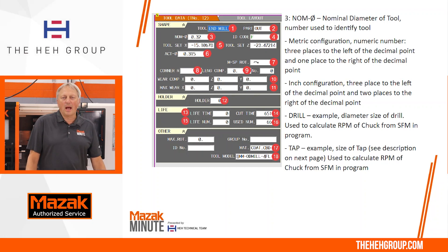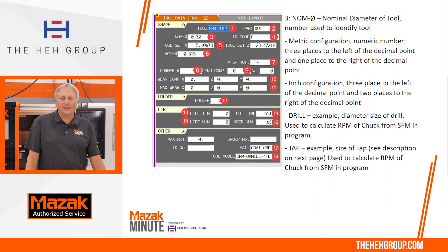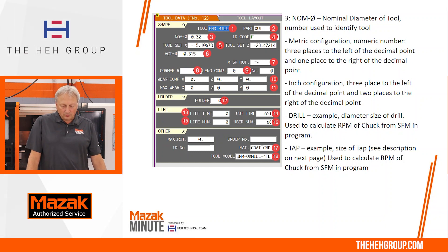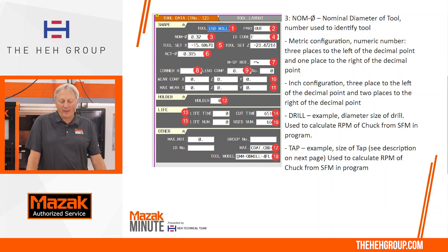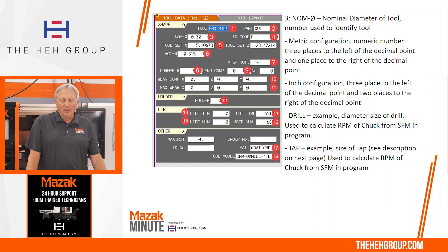Number three is the nominal size of the tool — that's going to identify the tool itself. In this case we have a 5/16th end mill and the nominal size can be two places to the right of the decimal, hence we have 0.32. For drilling tools, that would be the diameter of the tool, used to calculate the RPM of the chuck. For a tap, it's going to be the size of the tap and that's used to calculate the RPM of the tap.